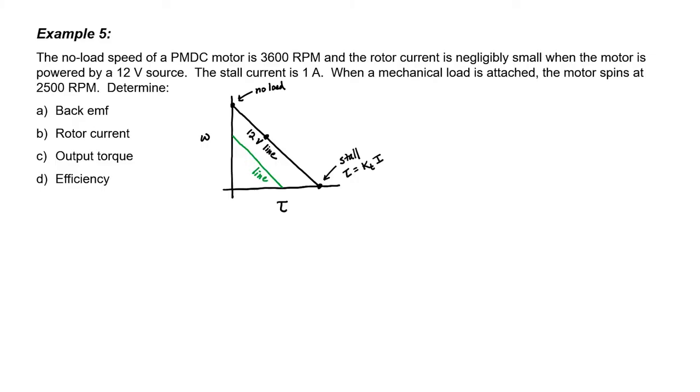In this problem, we're operating at 12 volts only. So I'm going to remove the 10 volt line and the label on the 12 volt line. What we're essentially tasked with doing in this problem is to find the operating point. When the 2500 rpm load is attached, we need to find the speed and the torque. If we know the torque, then we also know the current. If we know the output power, then we also know the efficiency.